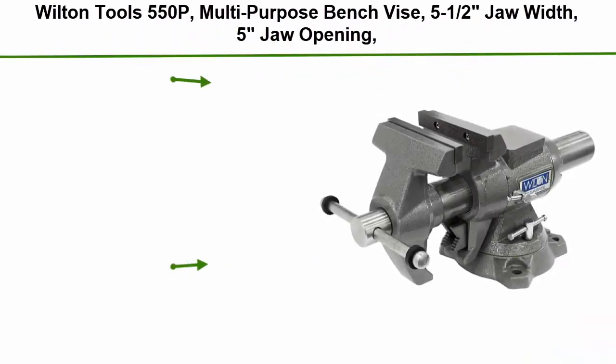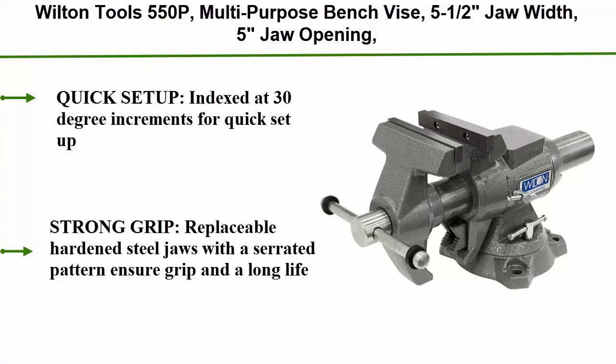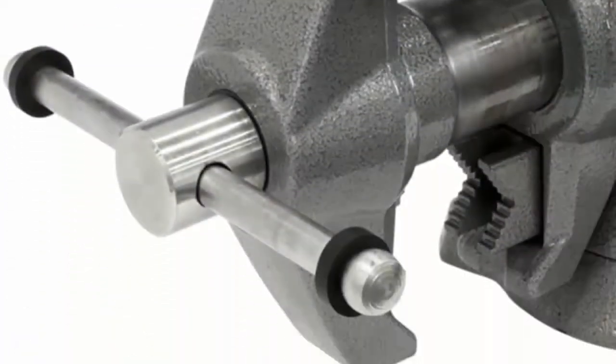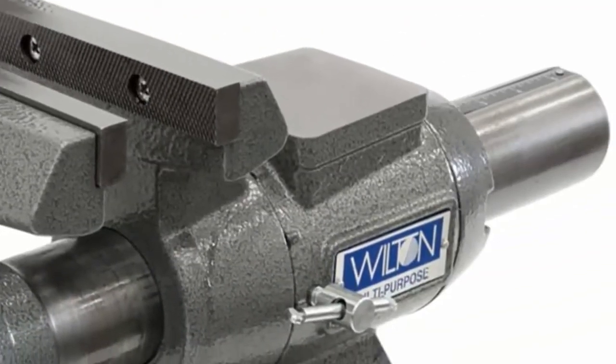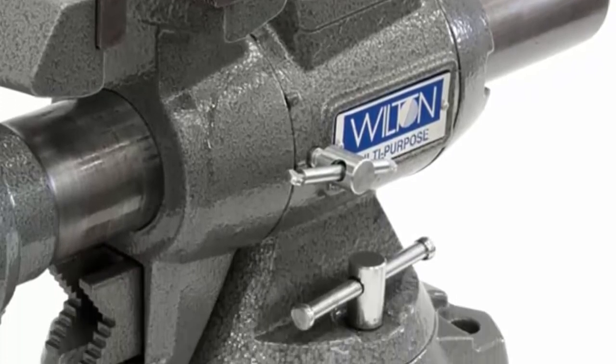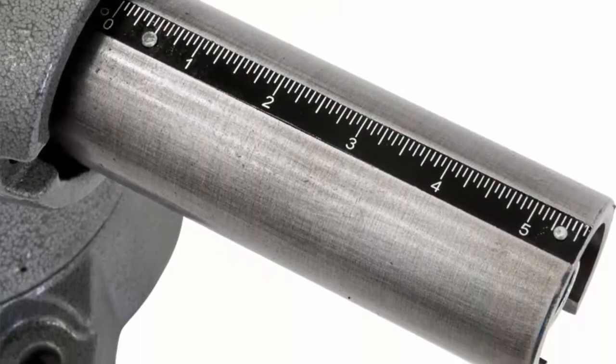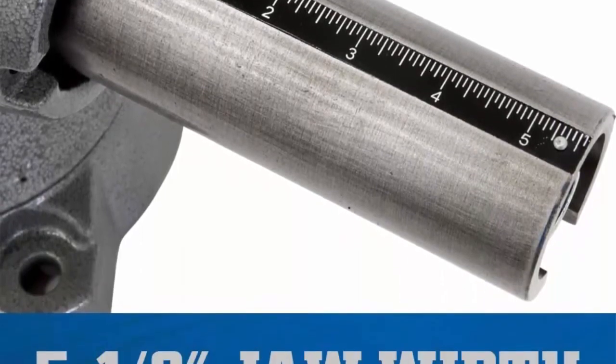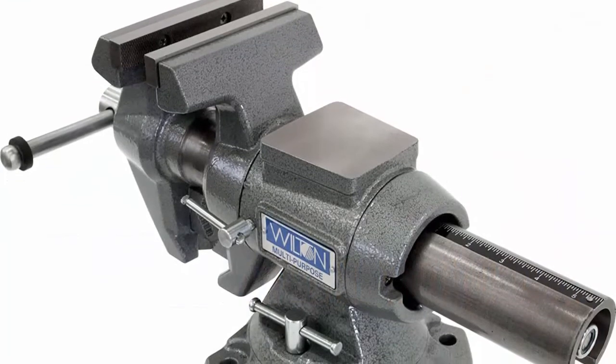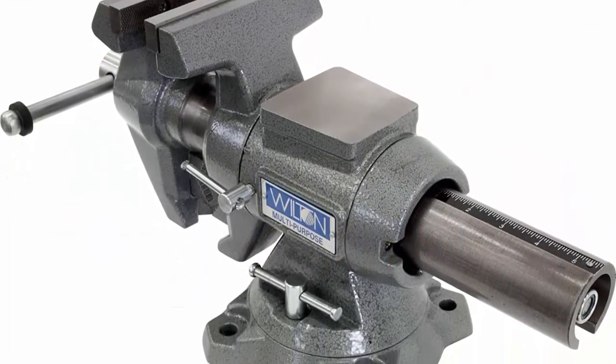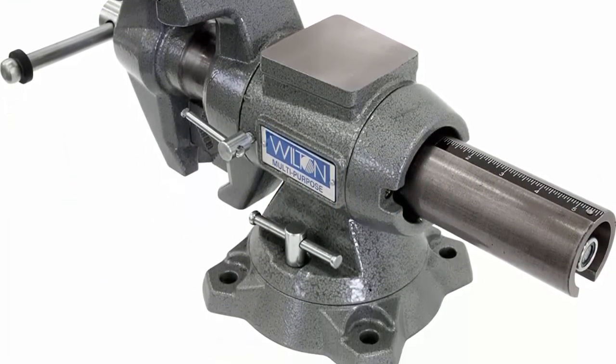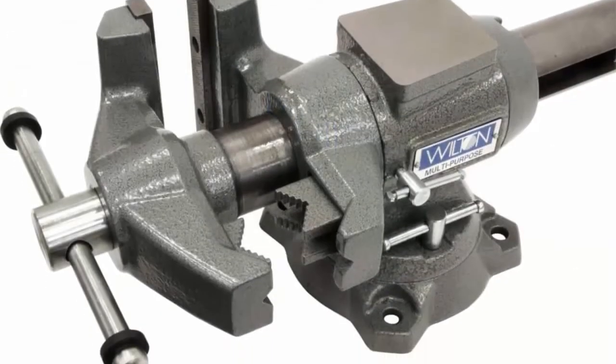Top 5: Wilton Tools 550P multi-purpose bench vise. 5 and a half jaw width, 5 jaw opening. 360 degree rotating head, quick setup index to 30 degree increments for quick setup. Strong grip: replaceable hardened steel jaws with a serrated pattern ensure grip and a long life. 360 degree rotating head can clamp material at any angle. Lifetime warranty - product is built to last. Wilton warrants every product they sell against manufacturer's defects. Performance has built-in pipe jaws and the V-jaw to easily hold round objects vertically.